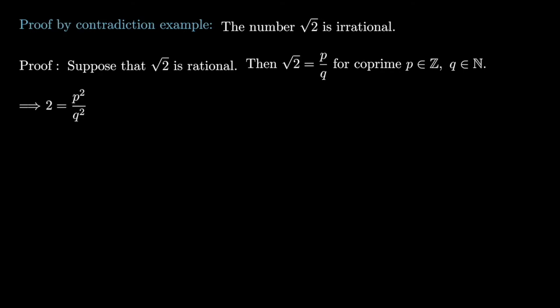If we square both sides, I see that 2 is equal to p squared over q squared. Taking the q squared over, this tells me that p squared is equal to 2q squared, and in particular p squared being a multiple of 2 must be even. But if p squared is even, then p must be even. And in particular we see that p is equal to 2m for some m.